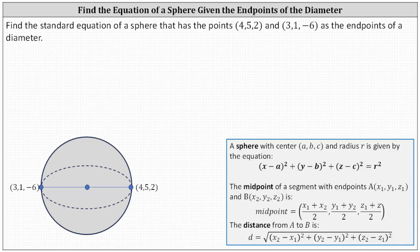Recall a sphere with center (a, b, c) and radius r is given by the equation: the square of (x minus a) plus the square of (y minus b) plus the square of (z minus c) equals r squared.